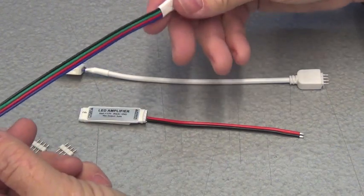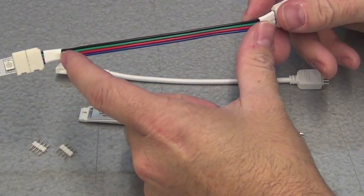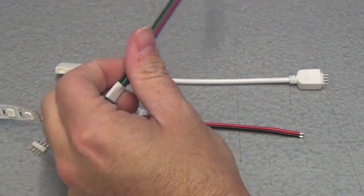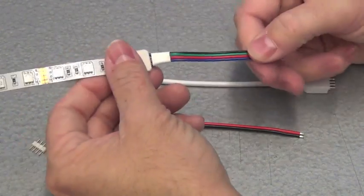In some cases though, you're going to need to be able to lengthen the distance between the connector and the LED strip light. In order to do that, you can take your scissors and you can cut the connector in half. Now that gives you two ends.